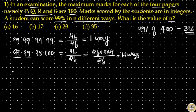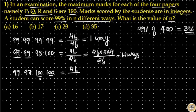If a student scored 99 in one subject, 97 in another subject, and 100 in the other two subjects, that means a total of 396 marks. Total elements is 4 factorial divided by 2 factorial (since 100 is repeated two times), which is equal to 12 ways.